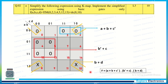Putting all this together in a product of sums form, the POS expression obtained is F = (A + B + C̄)(B̄ + C)(B + D). Now the question asks us to implement the simplified function using basic gates only — NOT, AND, and OR gates. To generate C̄ and B̄ we use NOT gates. The sum term (A + B + C̄) uses a three-input OR gate, (B̄ + C) uses a two-input OR gate, and (B + D) uses a two-input OR gate. The outputs of those three OR gates feed into a single AND gate.